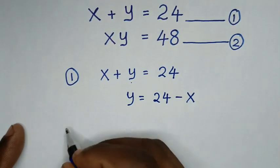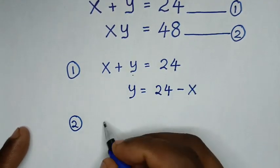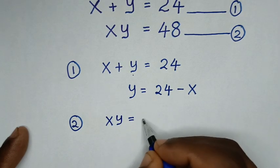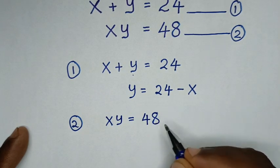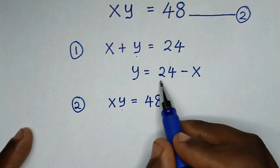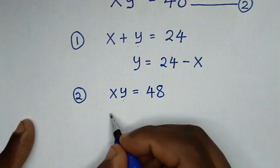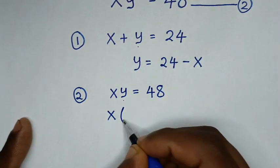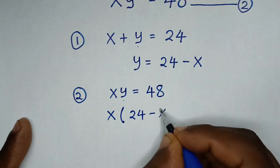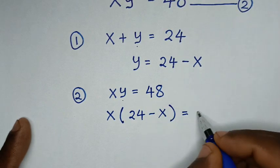Then in the next step, from equation 2, which is xy is equal to 48. From this, we substitute y which is 24 minus x. So it will be x times (24 minus x) is equal to 48.